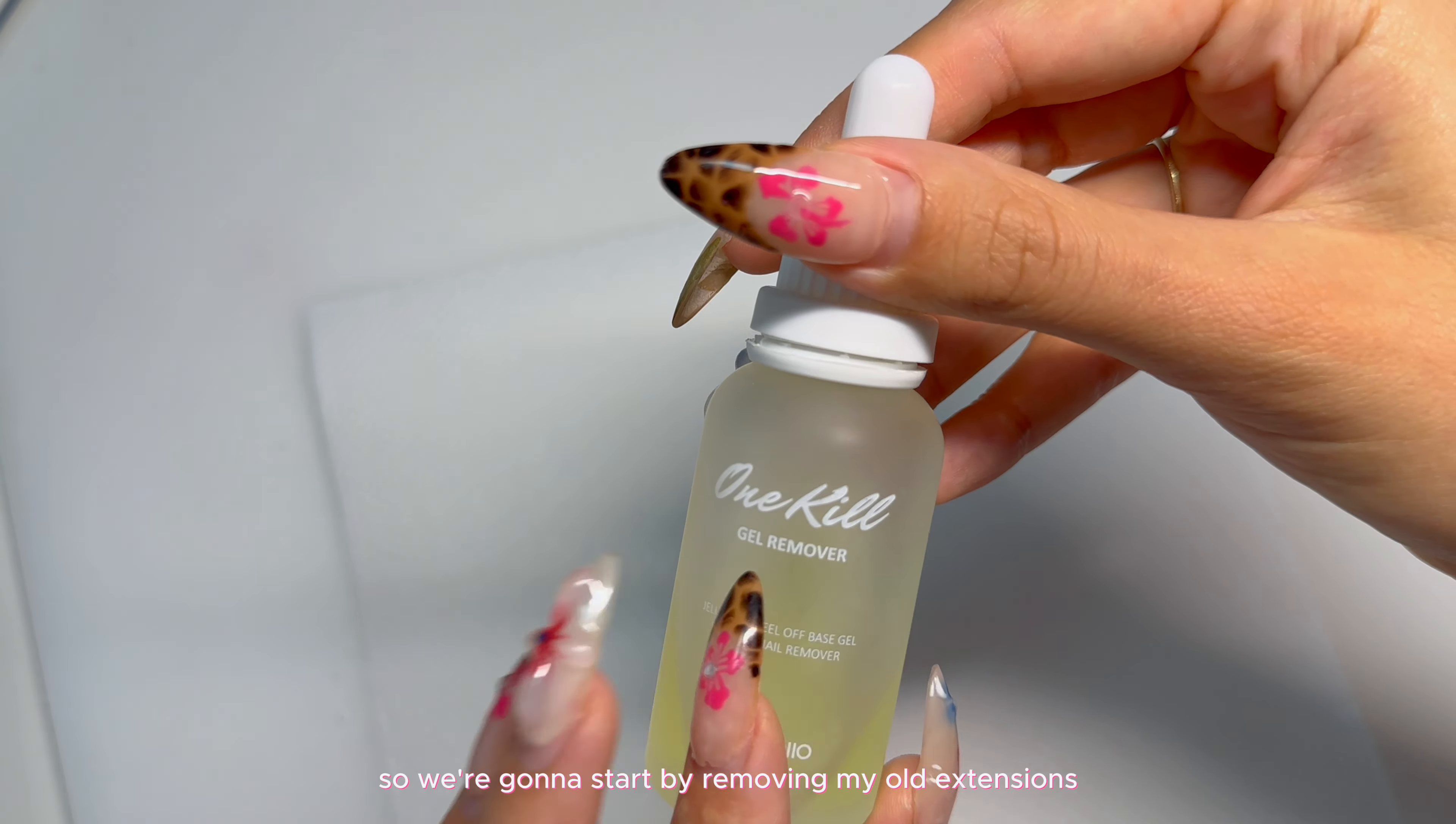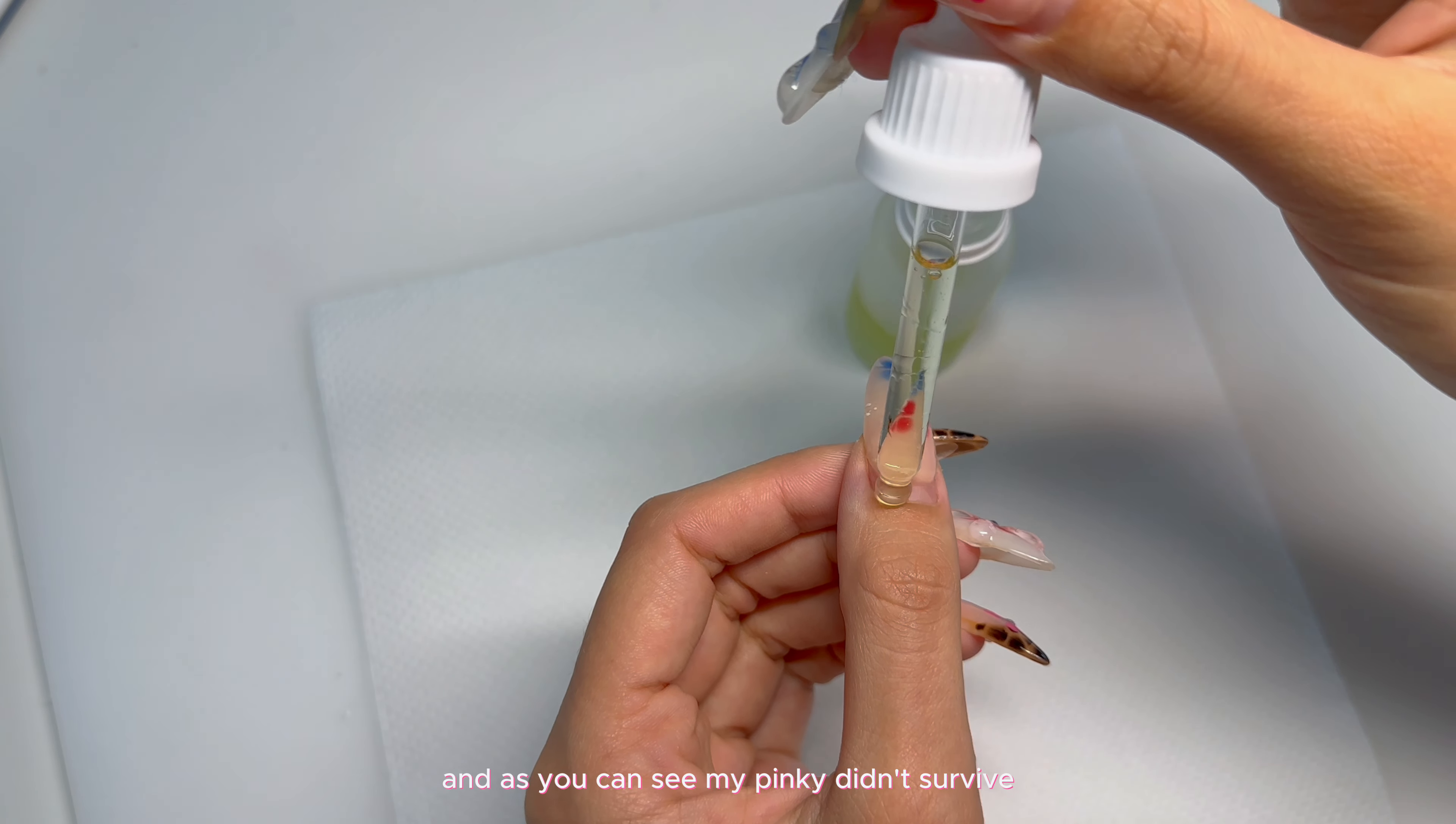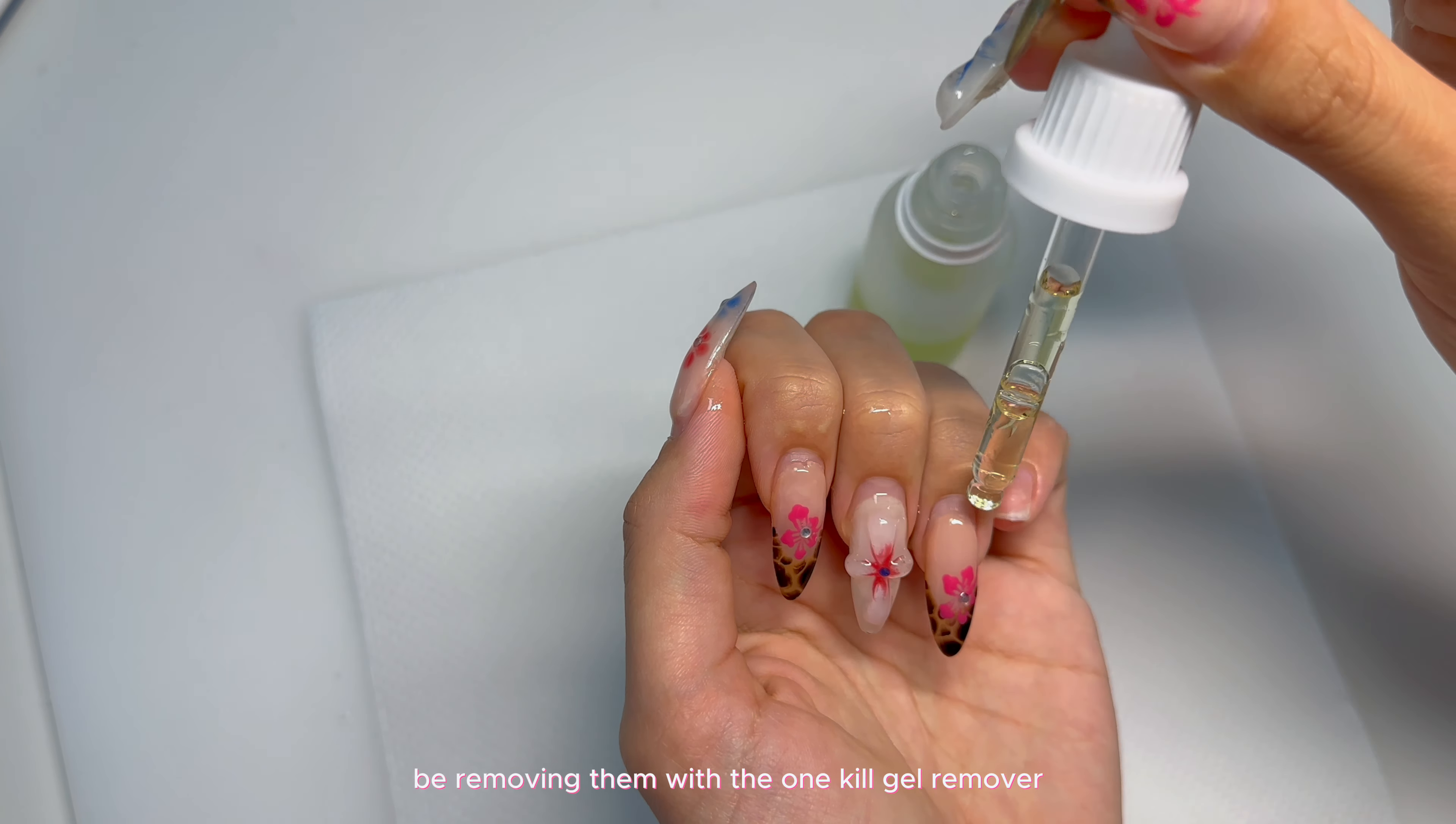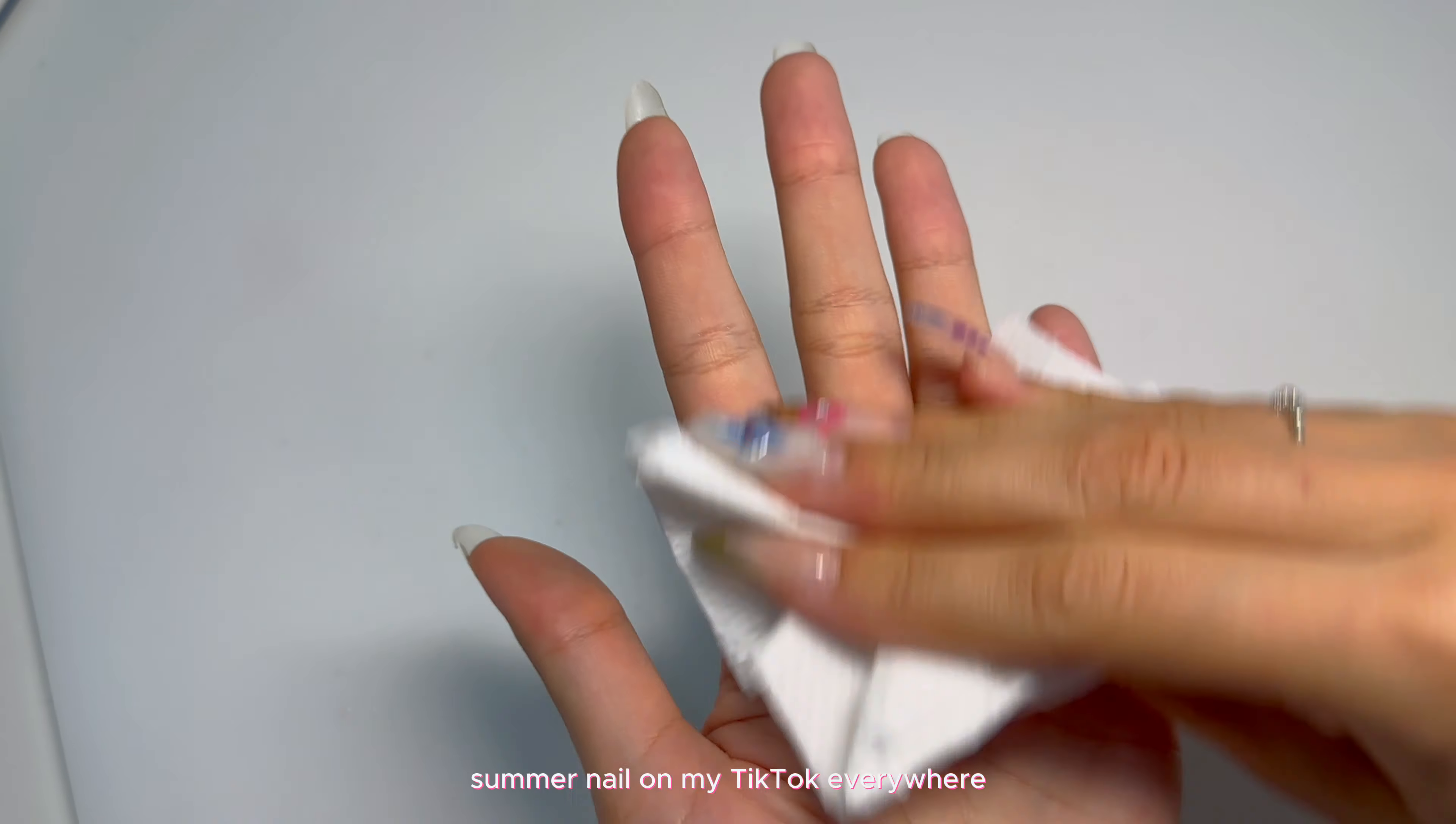Hi guys, today I'm going to go straight into the tutorial. I don't want to waste your time, so we're going to start by removing my old extensions. I've had these extensions on for maybe three weeks and as you can see, my pinky didn't survive. We're going to be removing them with the one kill gel remover. The reason I'm able to remove it so easily is because I used a peel-off base coat underneath. I do my nails so often that I need to use a peel-off base coat in order to protect my natural nails.